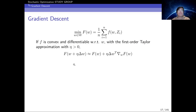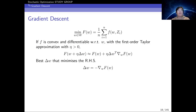We wish to minimize the right-hand side, which is equivalent to minimizing the second term. Here η is a positive constant and the gradient is a fixed vector. To minimize the second term, the best δW should be chosen as the negative gradient — think of δW and the gradient as two vectors whose inner product is minimized when they point in opposite directions. Based on this, we arrive at the gradient descent method.